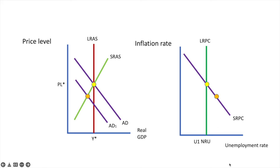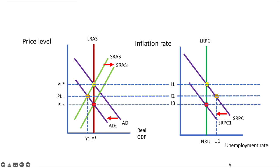Pause it here and give it a shot. If you've done this correctly, you shifted the short-run aggregate supply curve rightwards to SRAS1, returning to the level of output Y-star at a lower price level. You should also have shifted your short-run Phillips Curve leftward to SRPC1. If I add in all the labels to make it clear, this is what the final solution would look like.